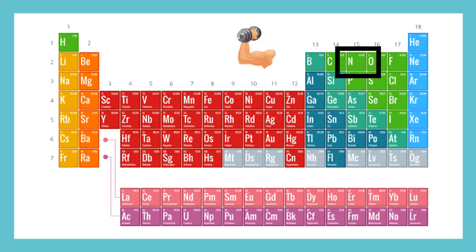Number seven is nitrogen, with the symbol N. Nitrogen is important for our bodies to be strong. That's because nitrogen is in protein.